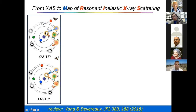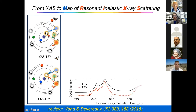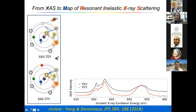Now, if we could resolve the outgoing photon coming out through this decay process, what will happen? In X-ray absorption, what you do is scan the incident photon energy and count the total number of particles — the photon or electron coming out — so you get a 1D spectra upon the incident X-ray excitation energy.